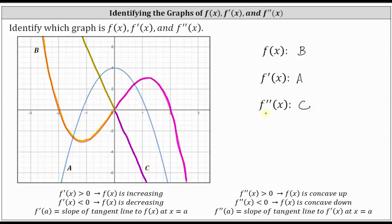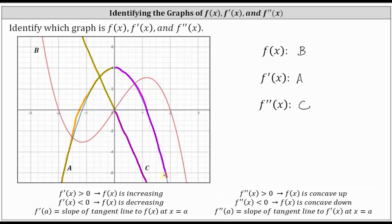Before we go, let's also verify that where the second derivative is positive, the first derivative is increasing, and where the second derivative is negative, the first derivative is decreasing. Looking at function a and function c: where function c or the second derivative is positive, the first derivative is increasing — this is when x is less than zero. And where the second derivative is negative, the first derivative is decreasing. I hope you found this helpful.